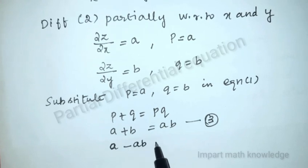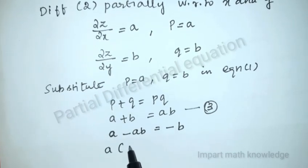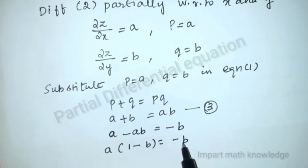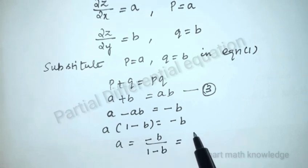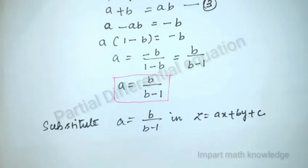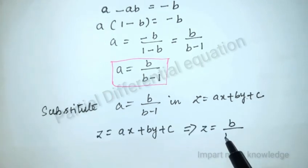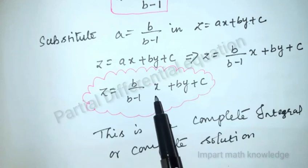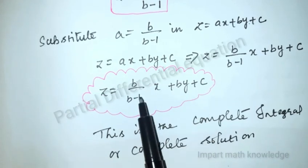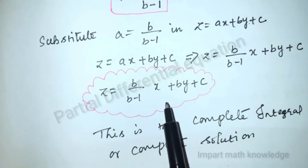Rearranging: a - ab = -b, so a(1 - b) = -b, giving a = -b / (1 - b), which can also be written as b / (b - 1). Substituting a into z = ax + by + c, we get z = [b / (b - 1)]x + by + c. This equation contains two constants (b and c) and two variables (x and y), so this is the complete integral.